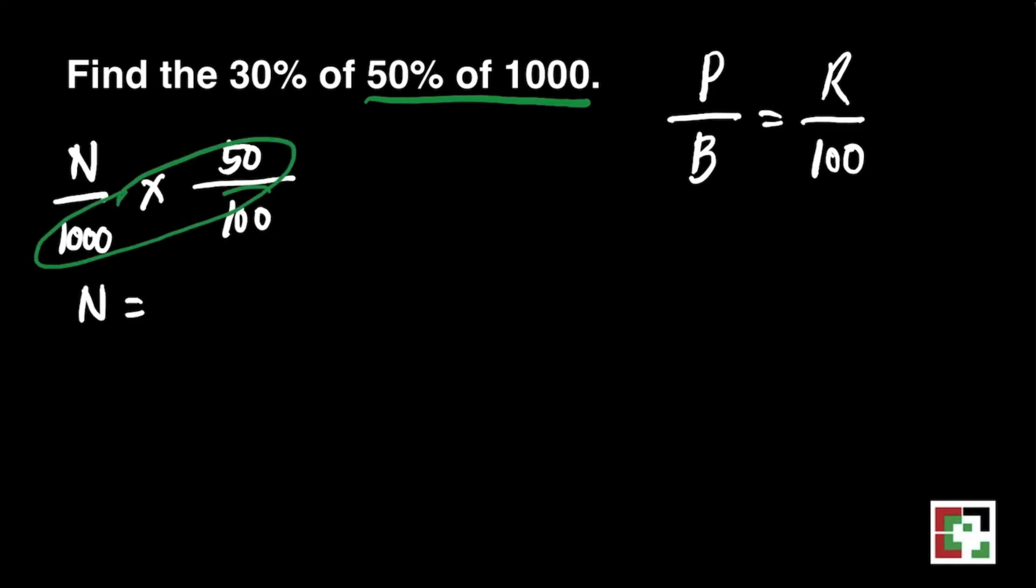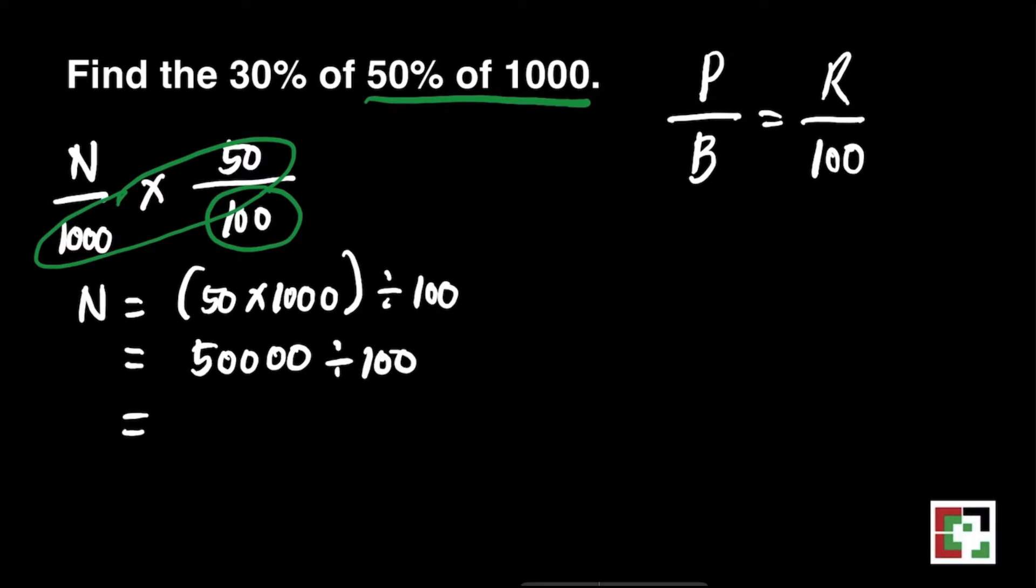To get the value of n, just do cross multiplication. That's 50 times 1000 divided by 100. 50 times 1000 is equal to 50,000 divided by 100. Cancel the zeros. We'll get 500.